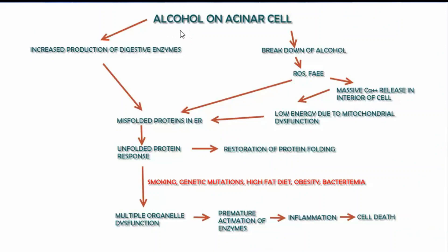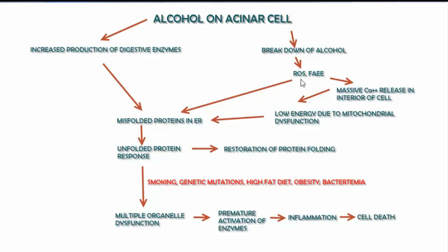After production, digestive enzymes enter the endoplasmic reticulum where they undergo folding into shapes necessary for their function. When alcohol comes into contact with the acinar cells, it can stimulate them to produce more digestive enzymes through increased RNA production, and this can lead to a build-up of mal-folded or unfolded proteins in the endoplasmic reticulum. The acinar cells also break down alcohol into its metabolites — reactive oxygen species as well as fatty acid ethyl esters — and these can act directly on the endoplasmic reticulum and cause malfunction and a build-up of unfolded and misfolded proteins.